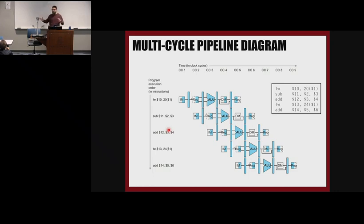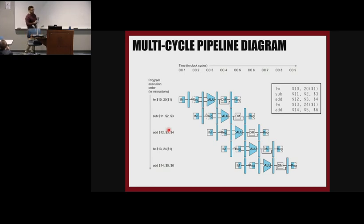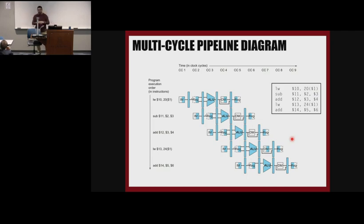Because there is no dependency, in every clock cycle we can send an instruction to the pipeline. With this kind of diagram, what we're showing is that we don't actually have multiple hardware — it's the same hardware. When load word is using the register file and reading the register, we're fetching the subtraction instruction.